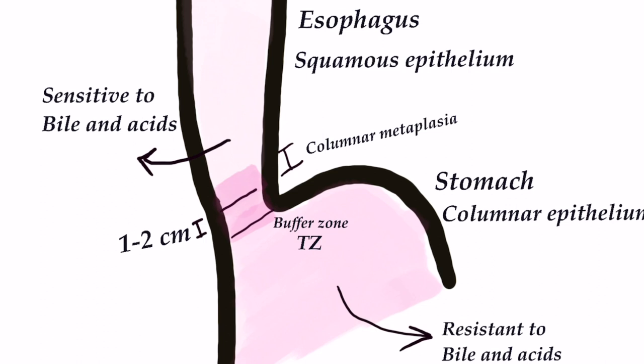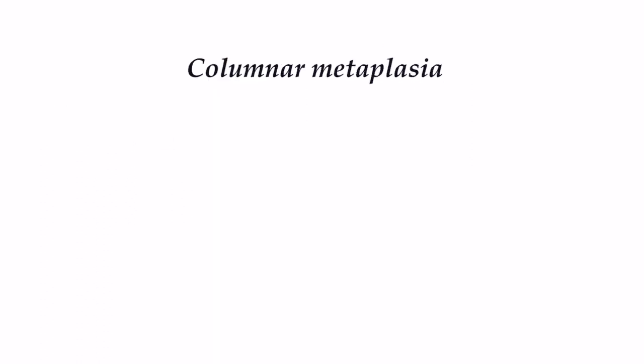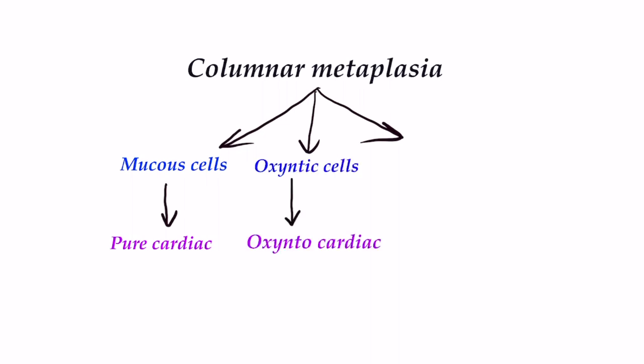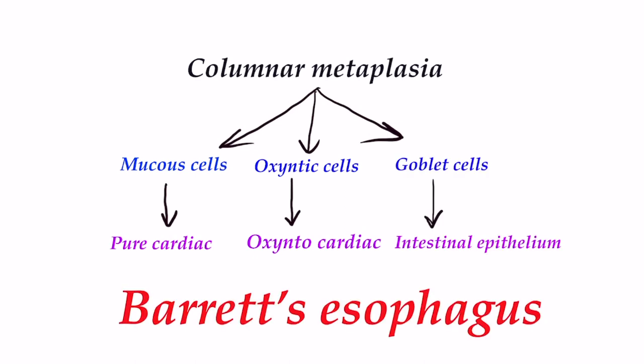If this columnar epithelium extends beyond this proximally, it is called columnar metaplasia. Columnar metaplasia can lead to three types of columnar epithelium based on type of cells: if there are mucus cells it is pure cardiac epithelium; if there are oxyntic cells it is oxyntocardiac epithelium; and if there are goblet cells then it is intestinal metaplasia. Barrett's esophagus is defined as transition of stratified squamous epithelium to intestinal columnar metaplasia.